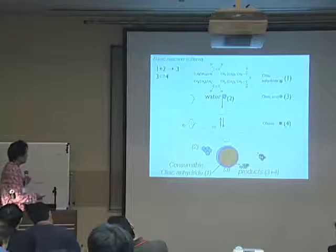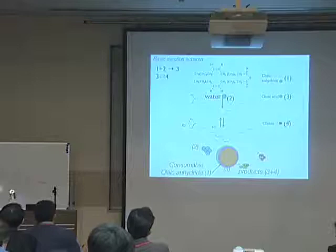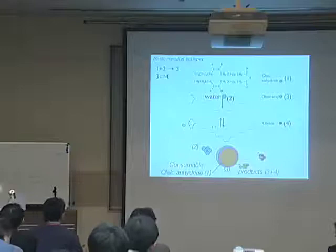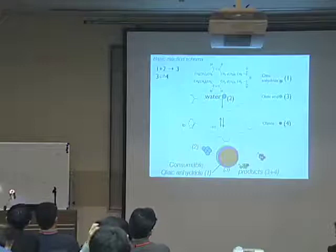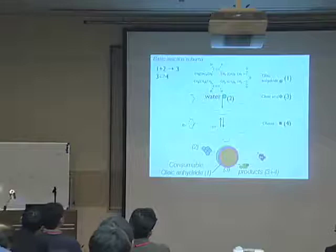I have to explain what the chemical reaction is about. This is the oleic anhydride. The oleic acid molecules are connected with these chains. When there is water, hydrolysis reactions cause the cutting of these bonds, and you can make two oleic acid molecules.